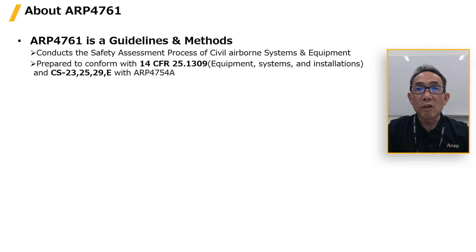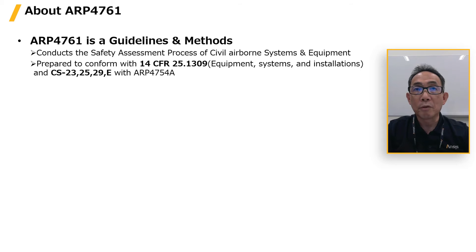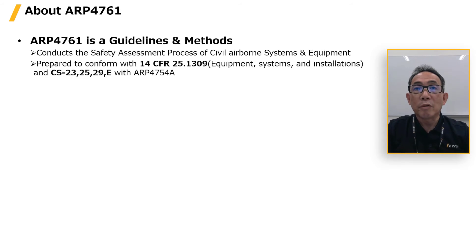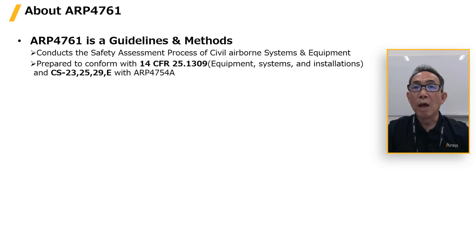4761 is a set of guidelines and methods for civil airborne systems and equipment. Note that the word 'civil' is important here. ARP does not support defense and military airborne systems and equipment — standards such as MIL standards support those. This is because defense and military airborne systems and equipment are installed and operated with priority given to functionality and performance over safety.